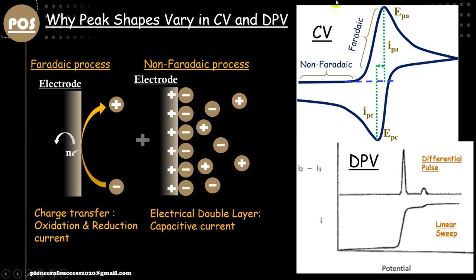In the first slide, we show a typical CV diagram and a DPV diagram. In CV, there are basically two peaks: the oxidation peak, obtained when voltage is increasing, and the reduction peak, obtained when voltage is decreasing. In DPV, we get sharp peaks based on the characteristic redox couples present in the system. Here, two redox couples are present, giving two peaks. The taller peak indicates a higher concentration of that particular redox couple, reflecting concentration in the DPV peaks.